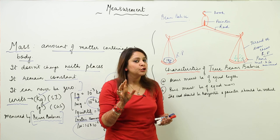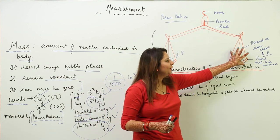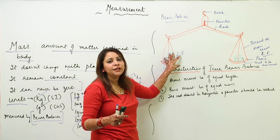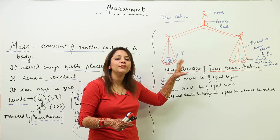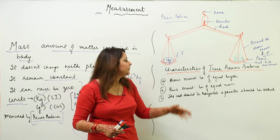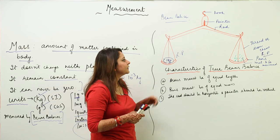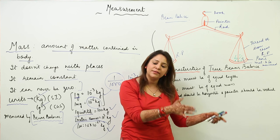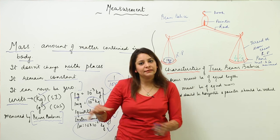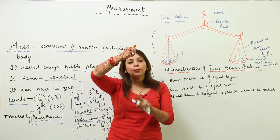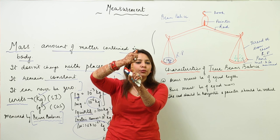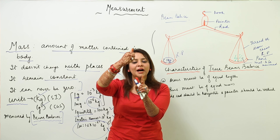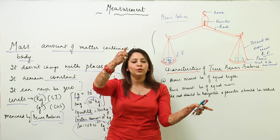On the left pan, the grocer places standard weights — there are standard weights of 5 kg, 2 kg, 1 kg, 500 g, 100 g, and so on. Since I needed 1 kg of dal, he places a 1 kg standard weight on the left pan. The pointer must be carefully observed — it needs to be in the middle, in a vertical position.